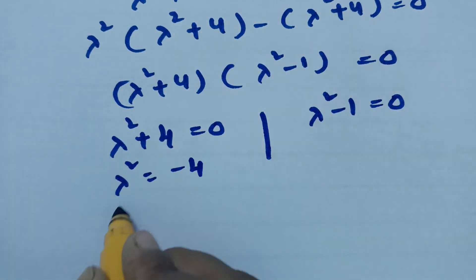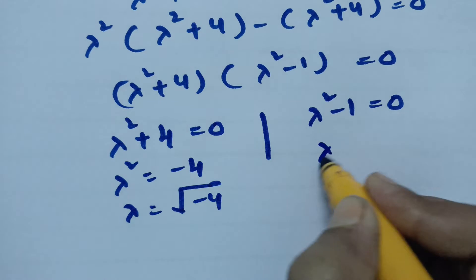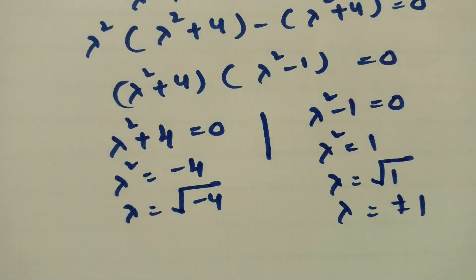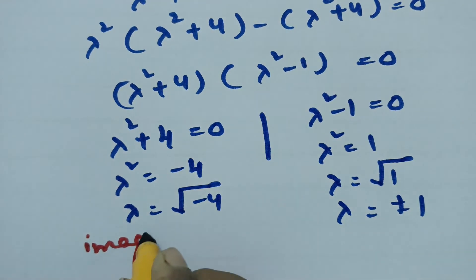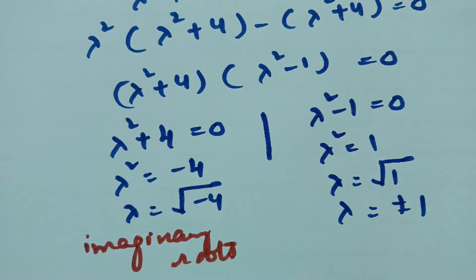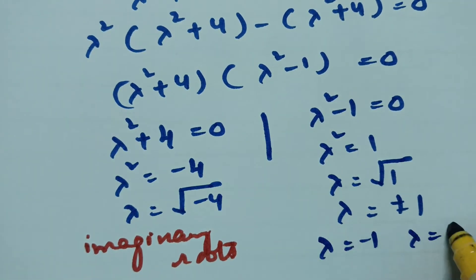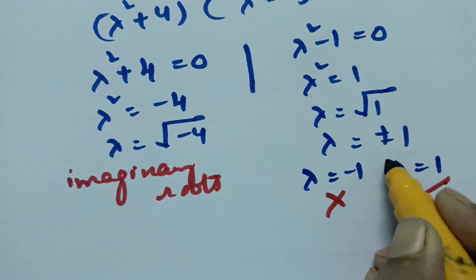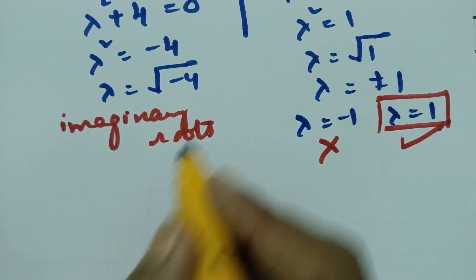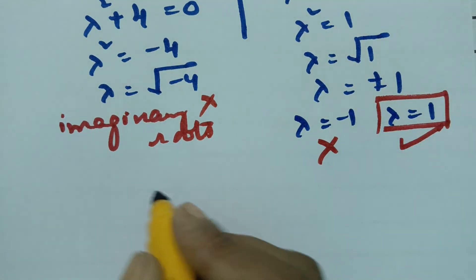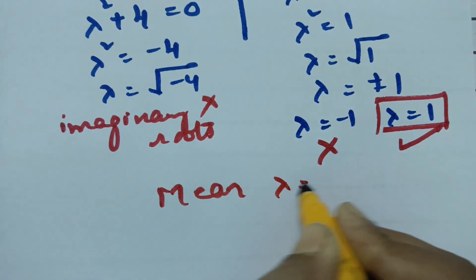From lambda squared plus 4 equals 0, we get lambda equals root of minus 4, which gives imaginary roots — these are rejected. From lambda squared minus 1 equals 0, lambda equals plus or minus 1. Since lambda is the mean and cannot be negative, we select lambda equals 1.